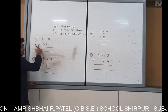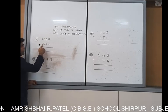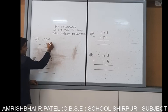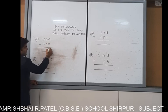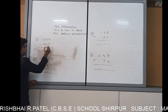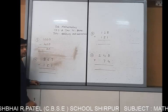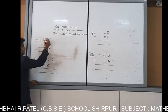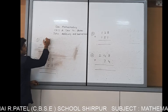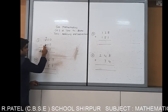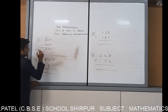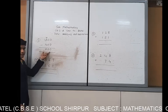Example number 9: 1000 subtract 400. 0 minus 0 is 0. 0 minus 0 is also 0. 0 minus 4 is not possible, so this becomes 10. 10 minus 4 is also 6. Your answer is 600.